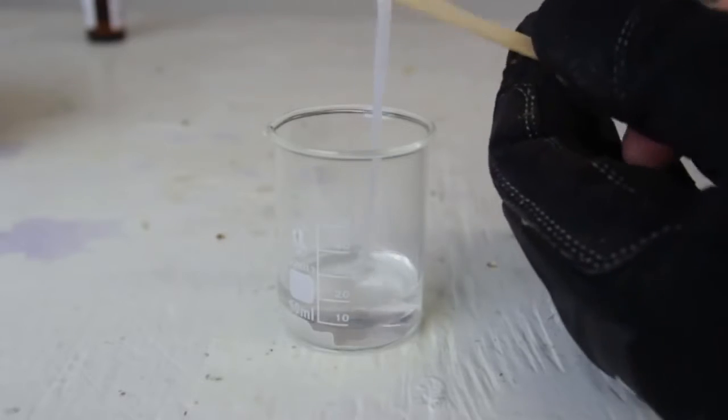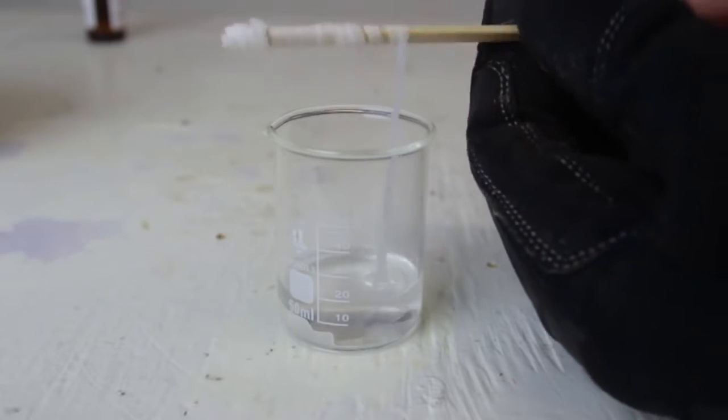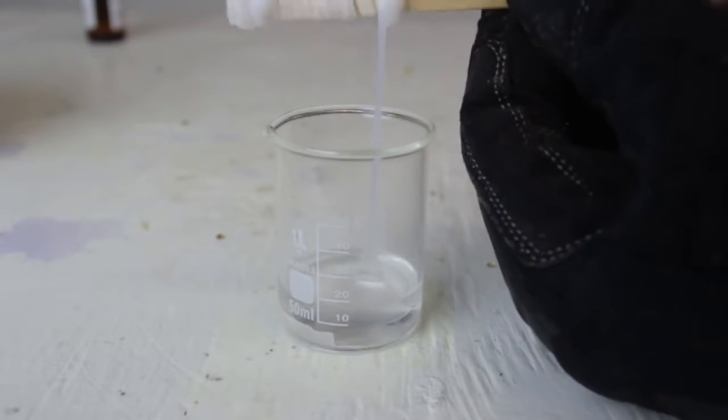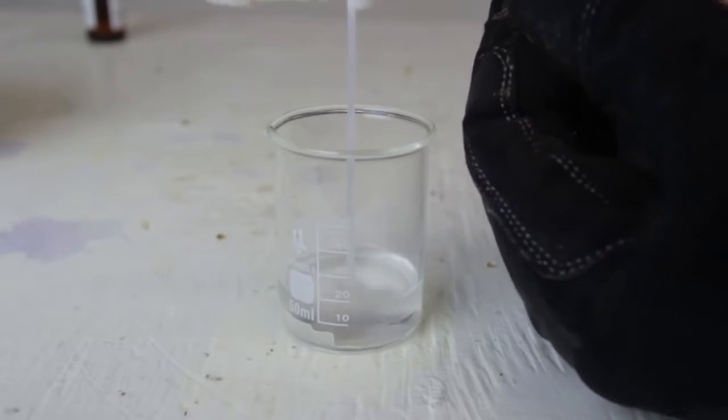Pretty cool, huh? So as you can see, the film has formed in the solution, so I'm just going to start twisting it. So this experiment is called Nylon 610 Rope Trick. Pretty cool, huh?